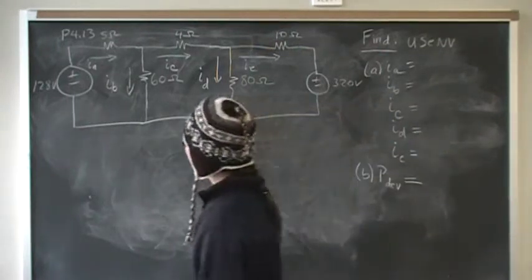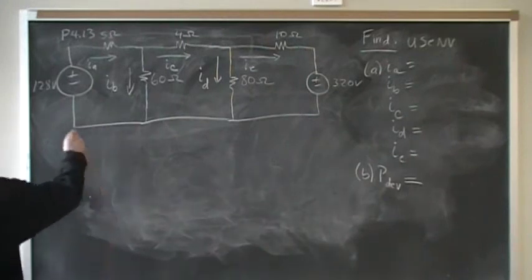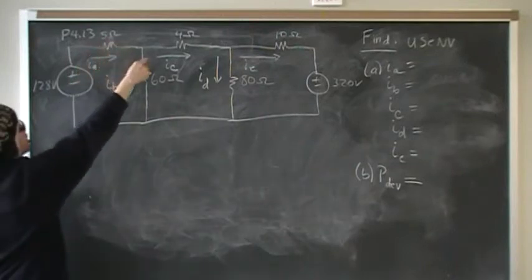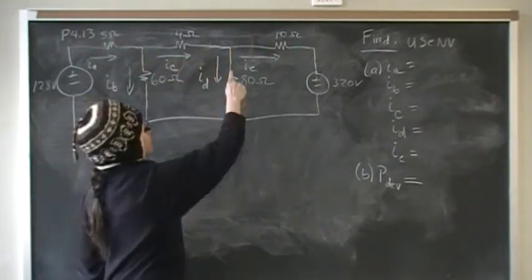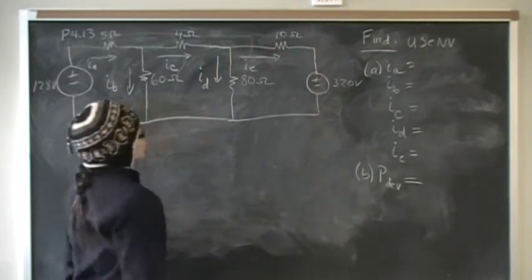This is problem number 13 from chapter 4. We have two independent voltage sources. On this side we have 128 volts, 5 ohms there, 60, 4, 80, and 10, and 10 is in series with 320 volts.